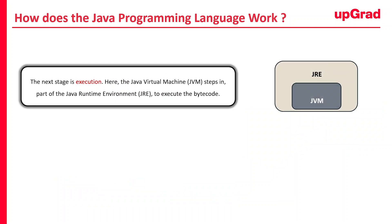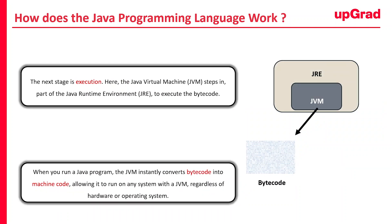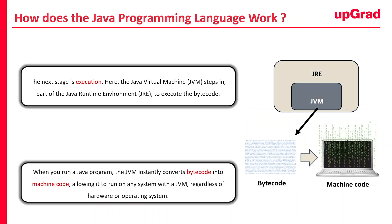The process doesn't stop at compilation. Once the source code has been compiled into bytecode, the next stage is execution. During this stage, the Java Virtual Machine, i.e. JVM, comes into play. The JVM is a part of the Java Runtime Environment and its job is to execute the bytecode. When you run a Java program, the JVM interprets the bytecode and translates it into machine code that your computer can understand. This translation happens on the fly, which is why Java programs can run on any system with a JVM, regardless of the underlying hardware or operating system.